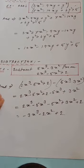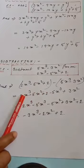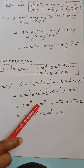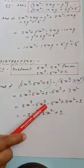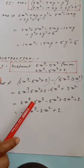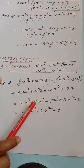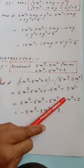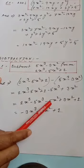Now arrange like terms: 2x³ and −5x³ give −3x³, since 5 is greater than 2 so we take the sign of 5, which is minus. For the x² terms: −5x² + 3x² gives −2x², since 5 is greater than 3 we take the sign of 5. The remaining constant term is 2.